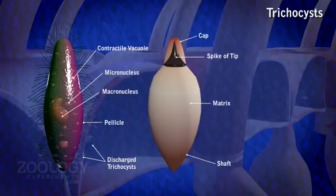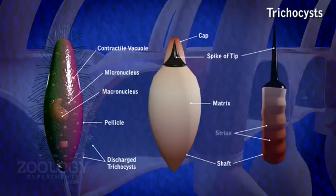Discharge of trichocyst is caused by mechanical, chemical or electrical stimulation. It occurs in a span of a few milliseconds. When fully discharged, the shaft becomes a long, cross-striated rod and measures about 40 micron in length.